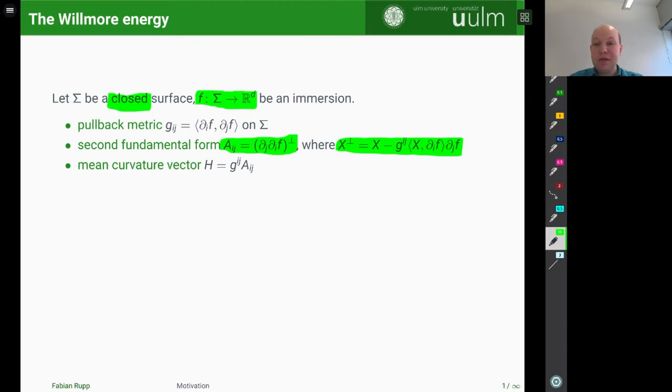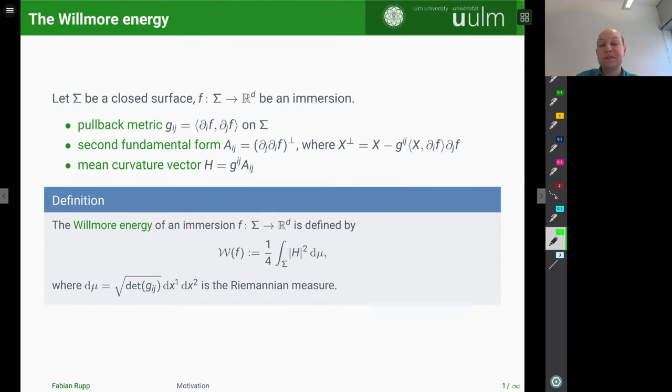And for this mean curvature vector, we then define the Willmore energy of the immersion to be 1 over 4 times the integral of the mean curvature squared, integrated with respect to dμ, which is the Riemannian measure induced by the metric, so induced by the immersion.